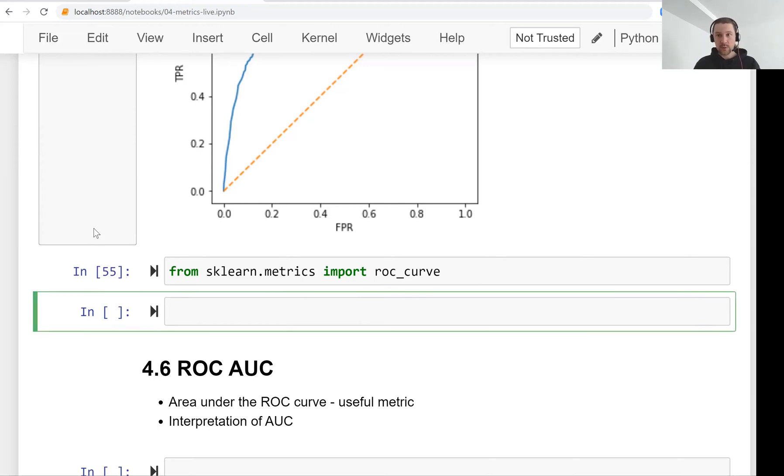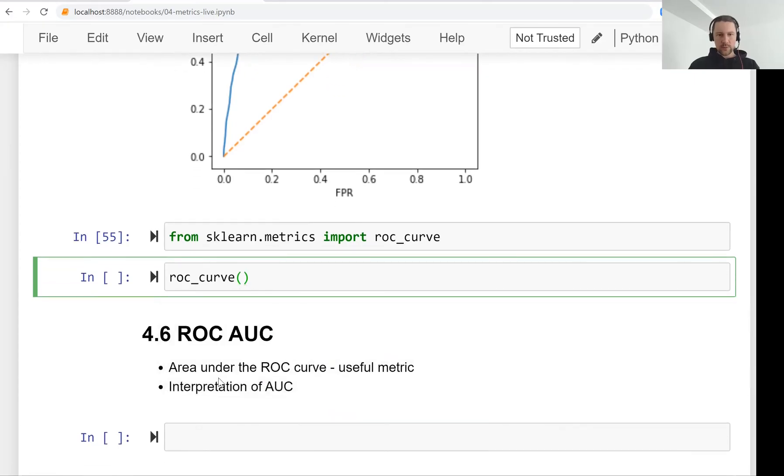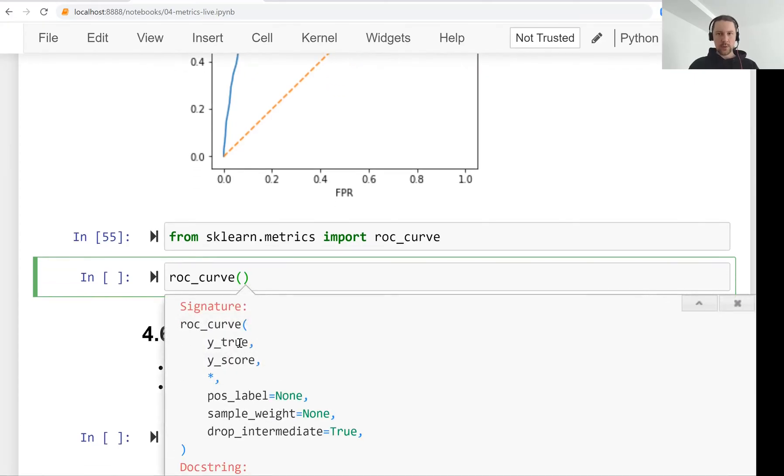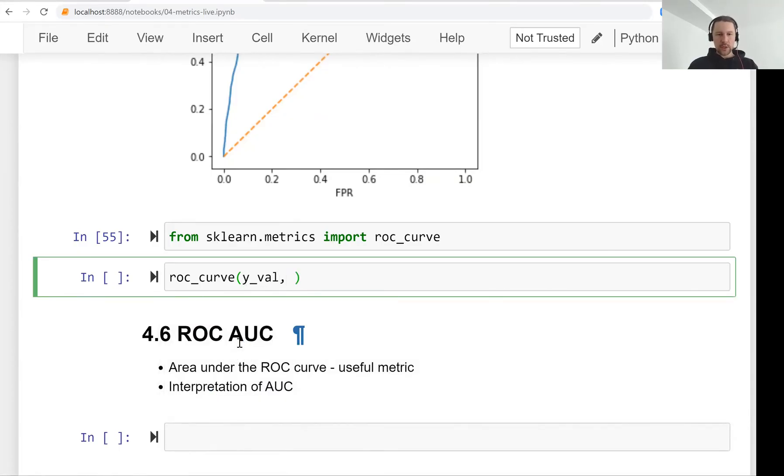And what it does is very similar to what we did. So take a look at this. What we need to give it is the actual values, the labels, and the scores. So in our case, it's Y_val and Y_pred.